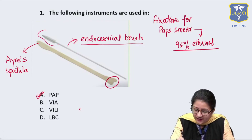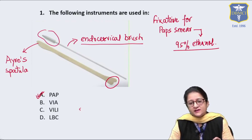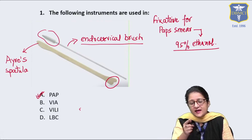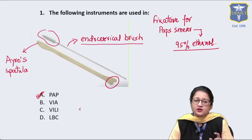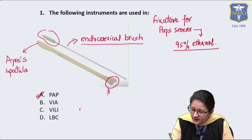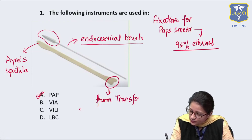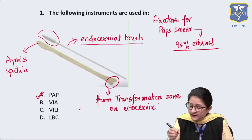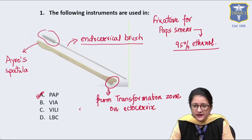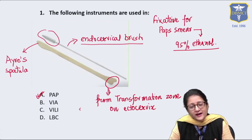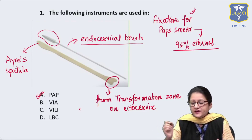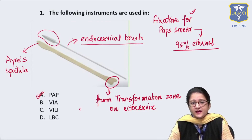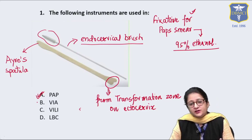The endocervical brush has fine bristles and is inserted into the endocervix, rotated 360 degrees to sample the endocervical region. In a conventional PAP smear we make two slides — one from the transformation zone on the ectocervix, and one from the endocervical region. Both slides are immediately placed in the fixative, which is 95% ethanol.